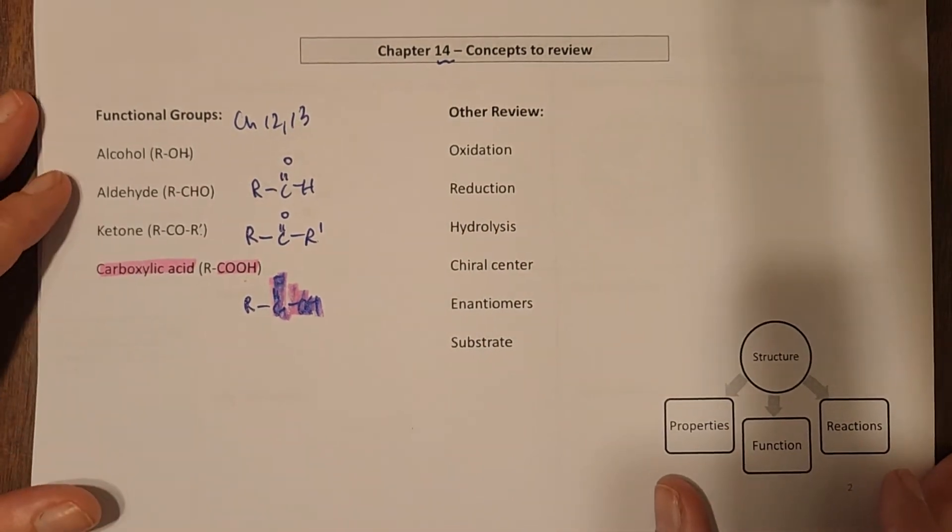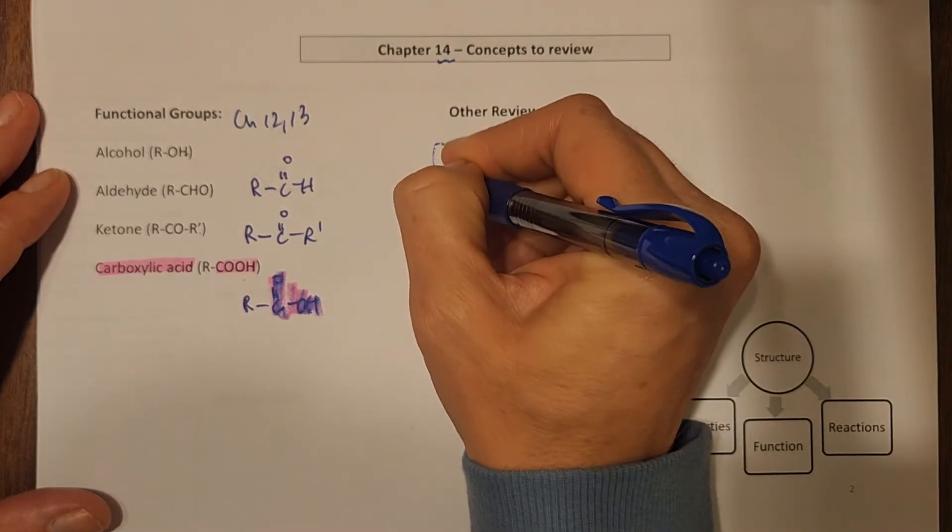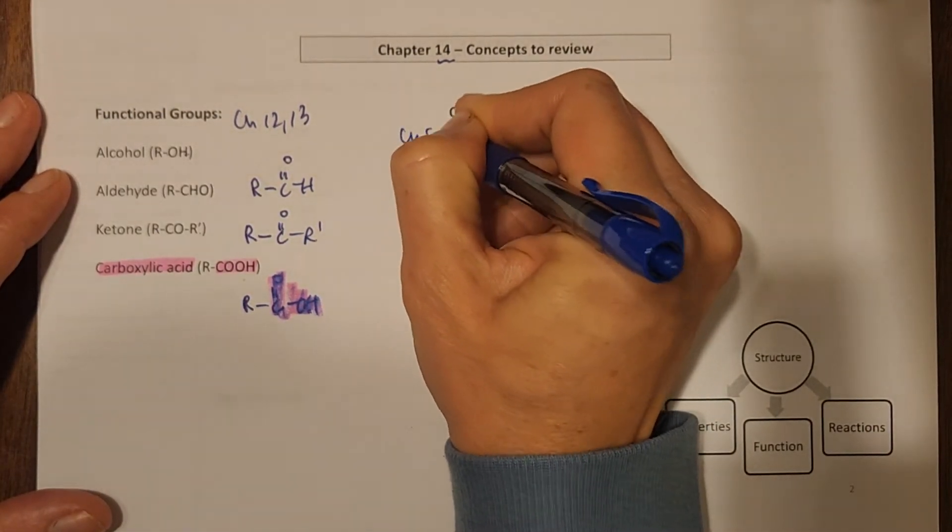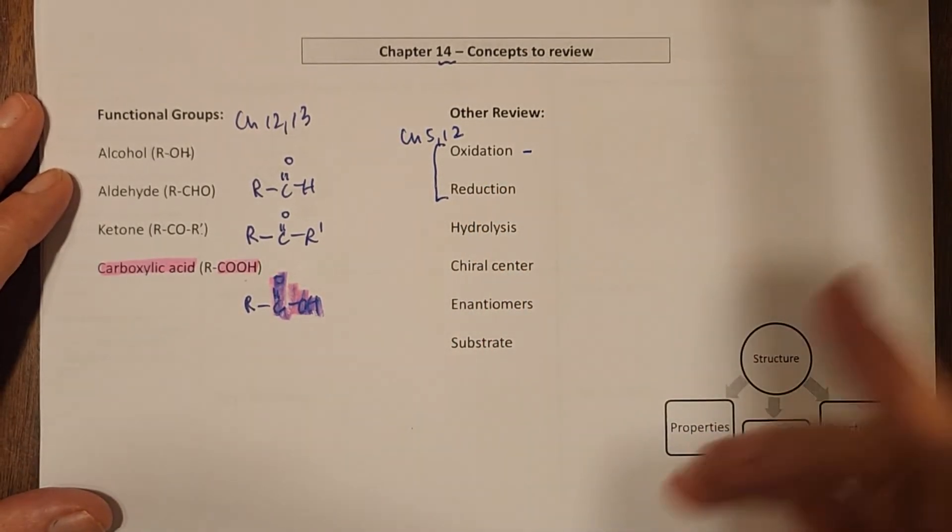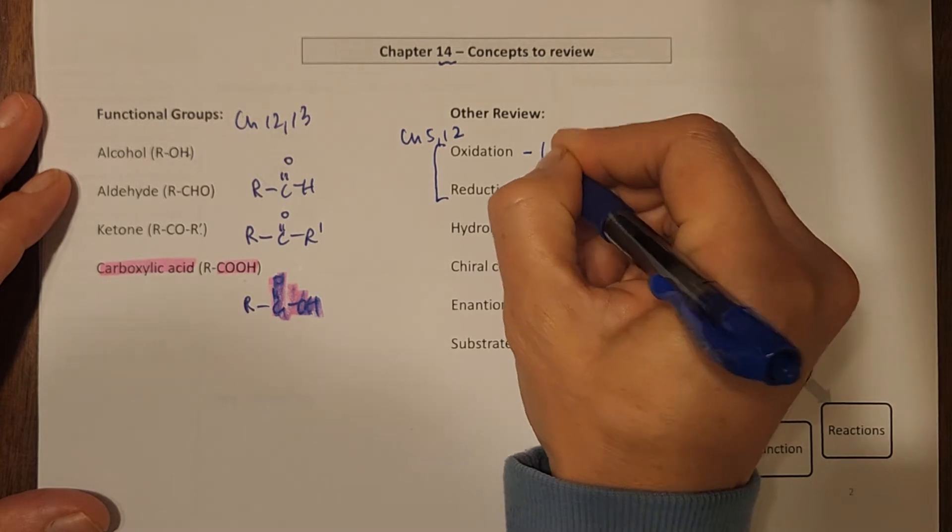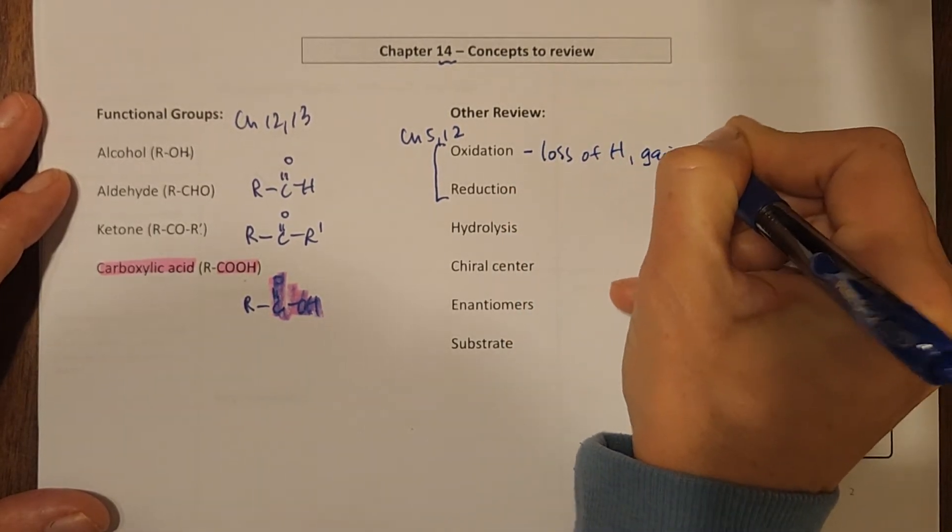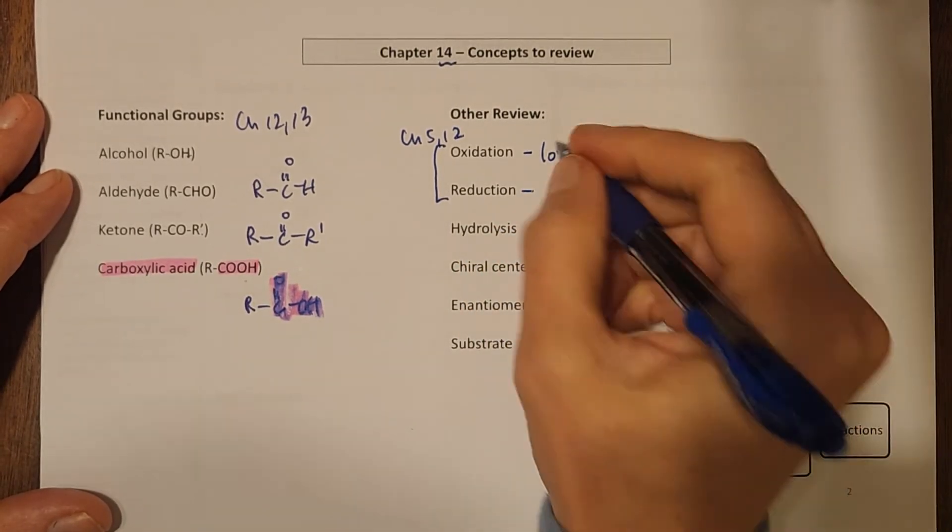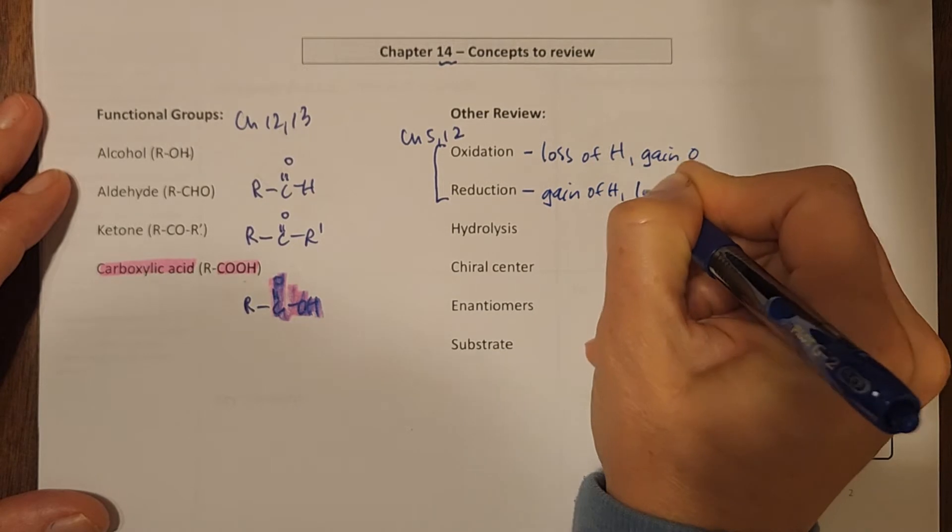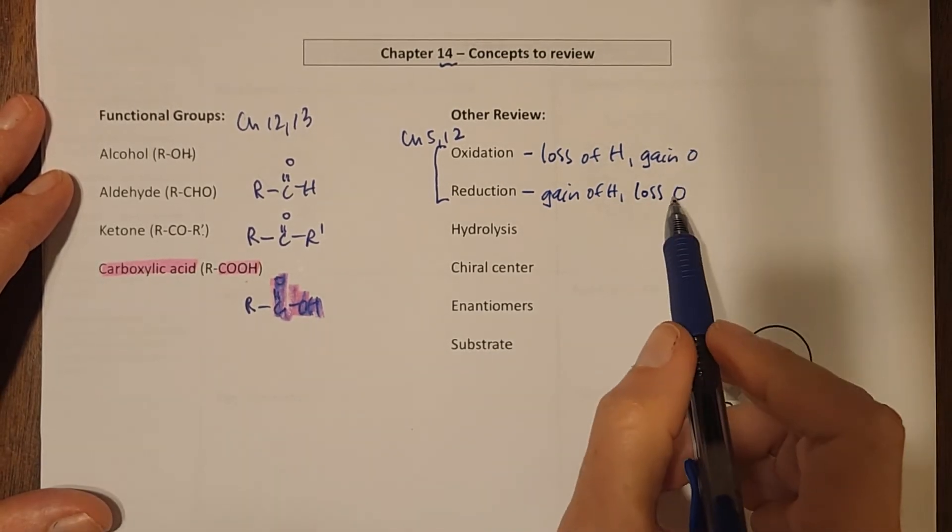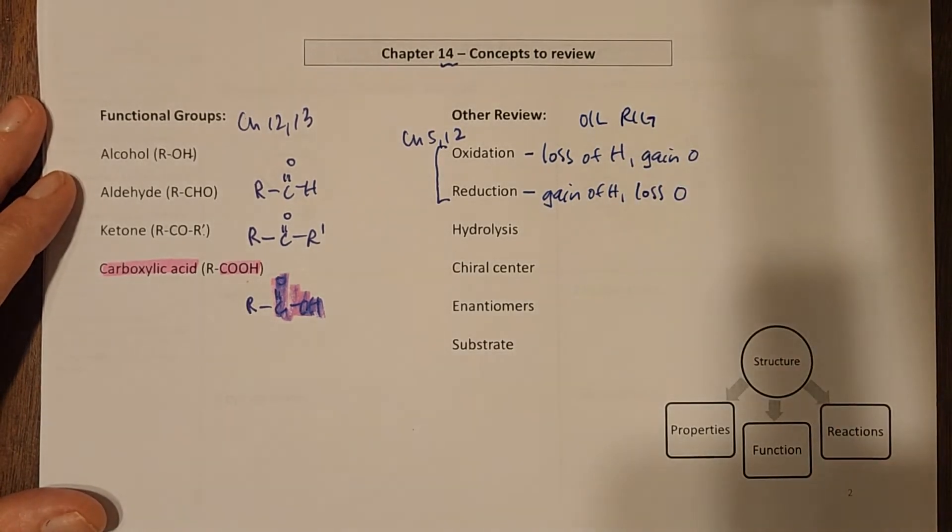Other terms and concepts to review that are going to come up again in this chapter: oxidation and reduction. If you need to review it, go back to chapter 5 and 12. Remember, we're working with organic molecules, so oxidation is going to be loss of hydrogen or gain of oxygen. Reduction is going to be gain of hydrogen or loss or reduction of oxygens. And I'm often coming back to OIL RIG to help me remember that.